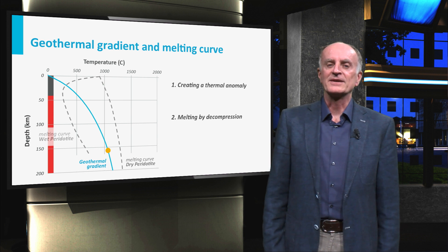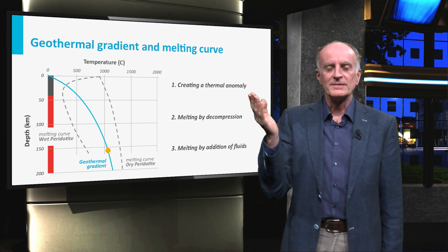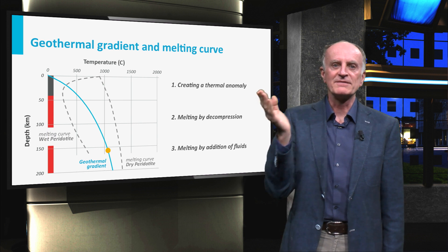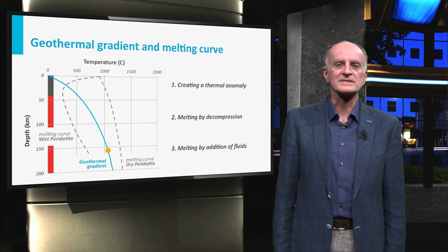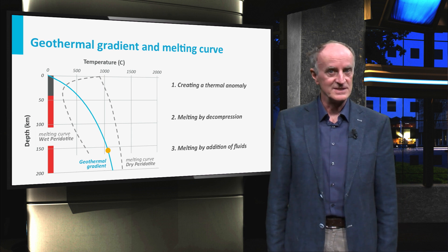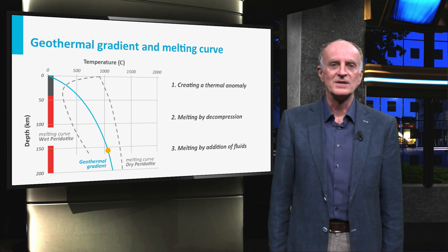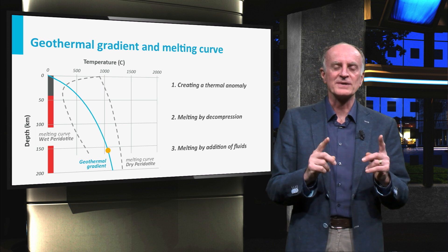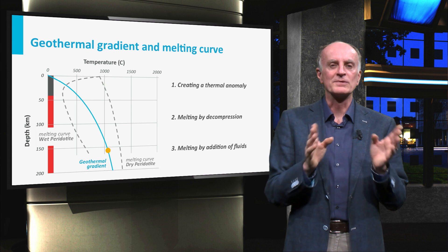The third process relates to the change of position of the melting curve. When fluids are added to the system, the melting curve shifts to the left and rocks previously in the stable field start melting. This is what happens in subduction zones, where fluids are added to the crust, thereby lowering the melting temperature.